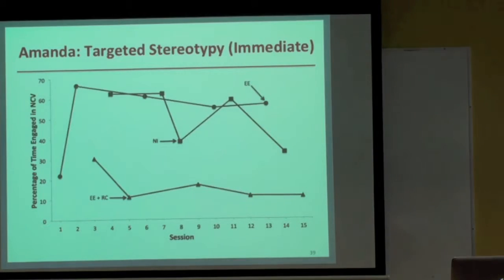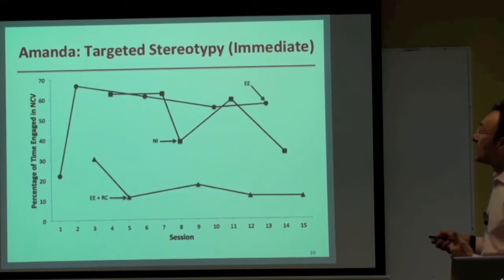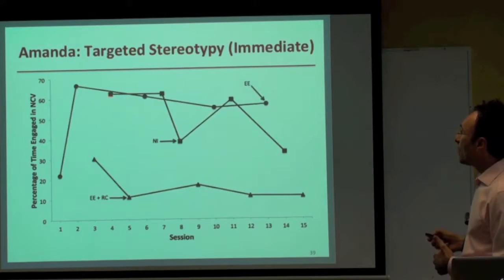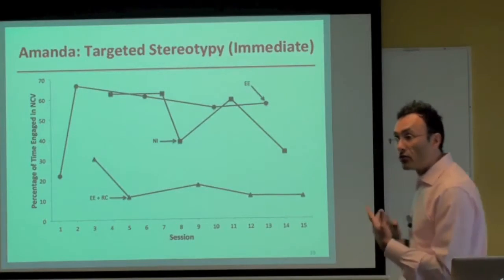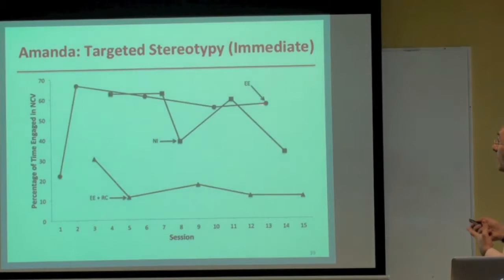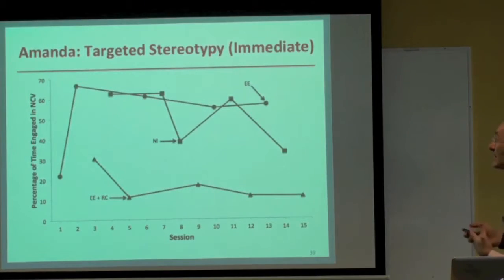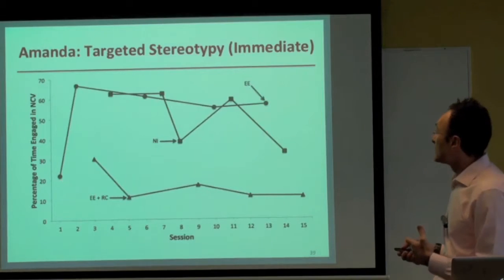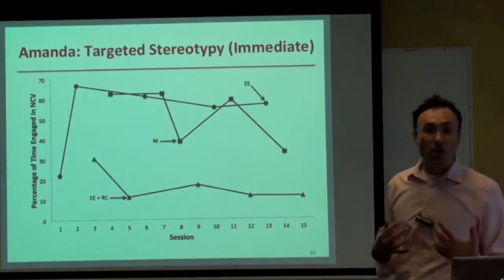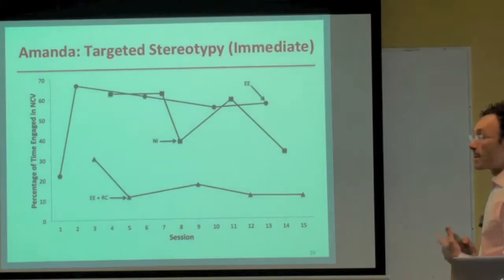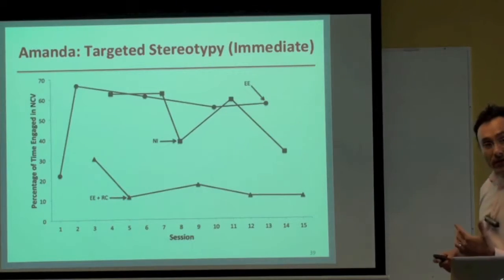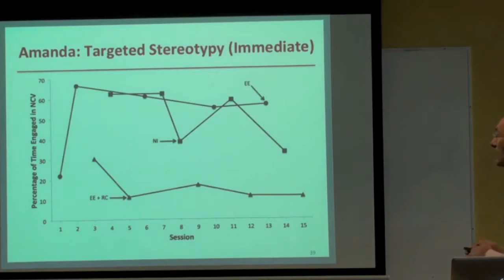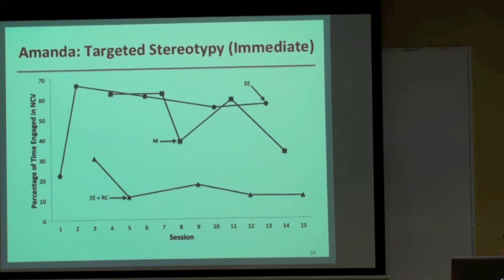For Amanda's targeted stereotypy — non-contextual vocalizations — the no-interaction data path shows variable but moderate to high durations of stereotypy. When we embed the environmental enriching stimulus, except for one initial session, stereotypy remains quite high — no sustained reductions. By contrast, when we implement response cost with environmental enrichment, we see a sustained reduction continuing across five sessions.